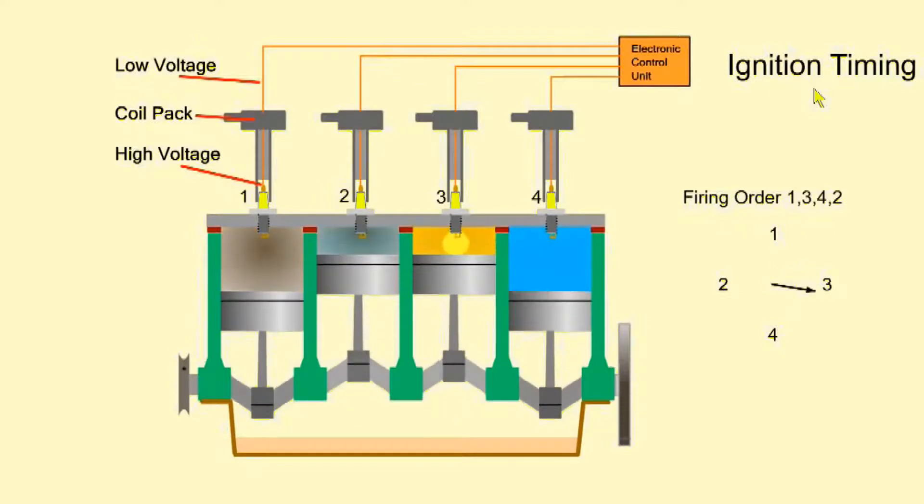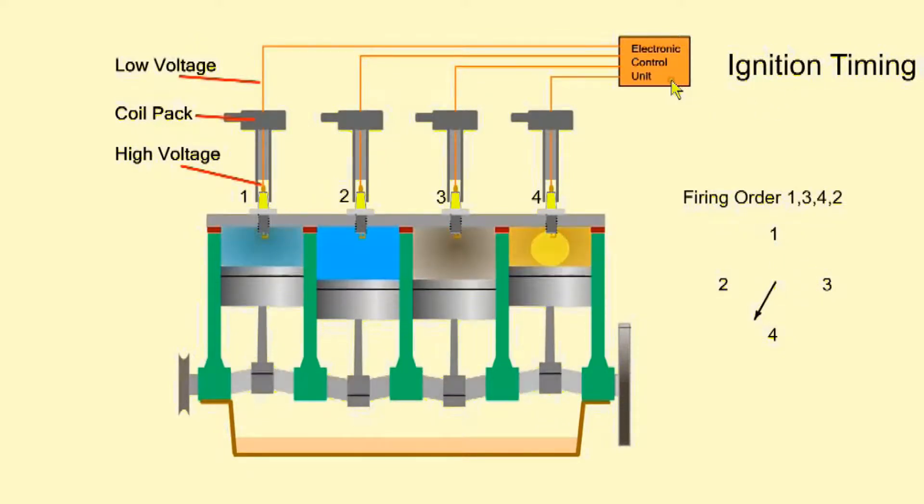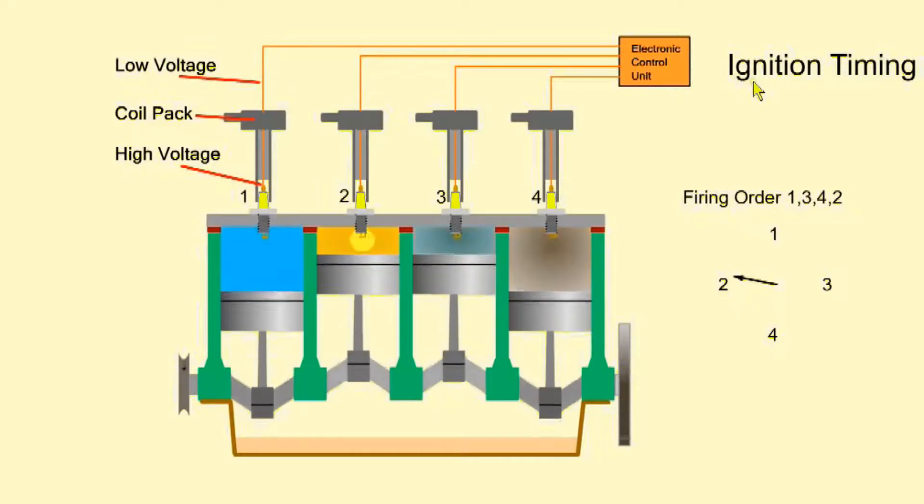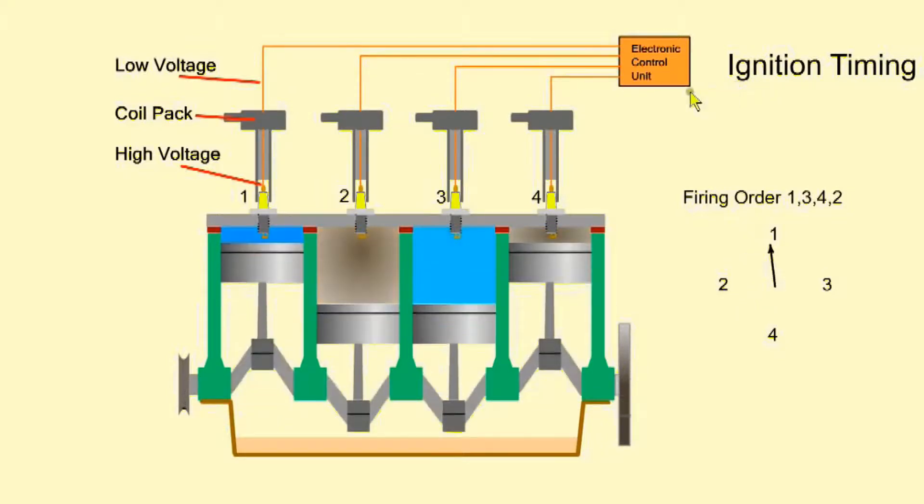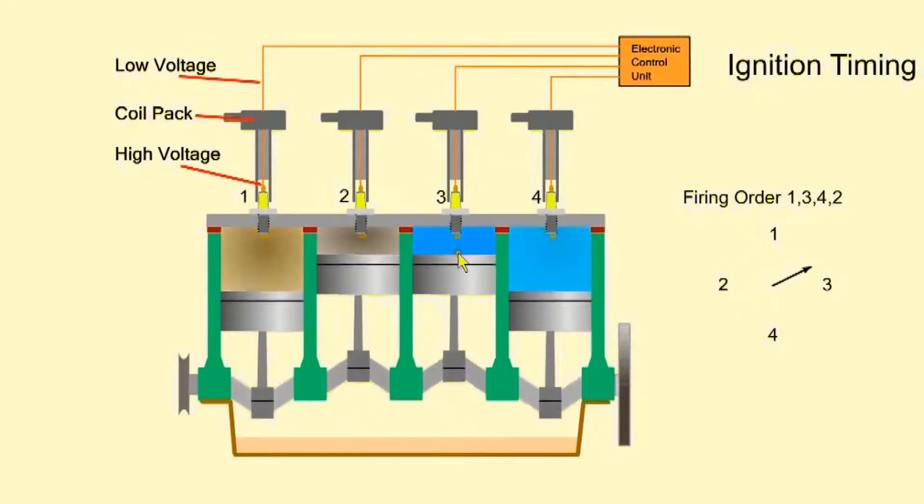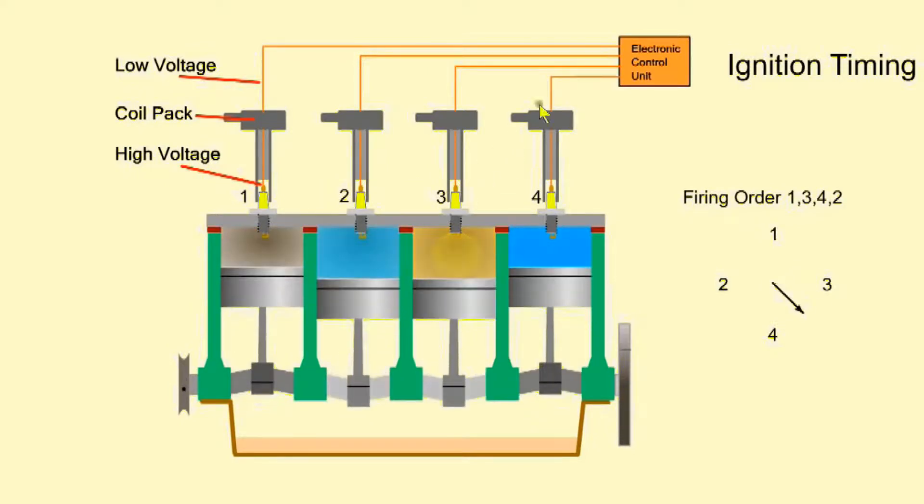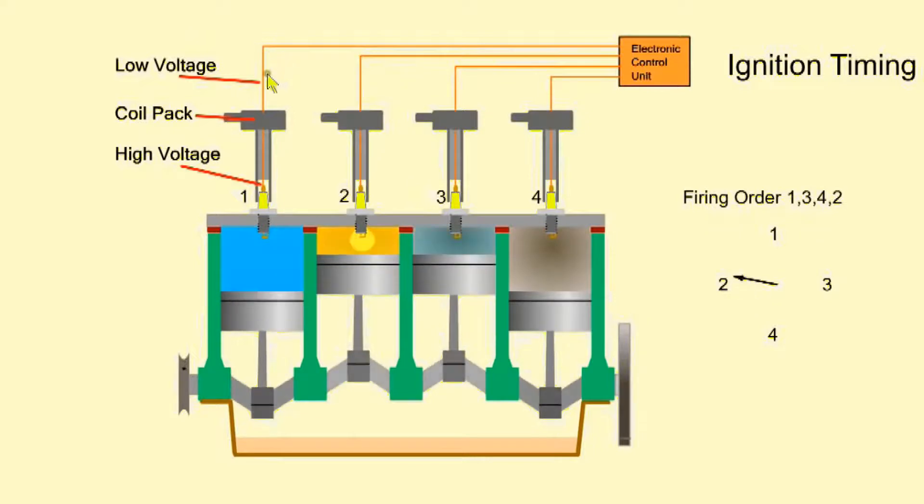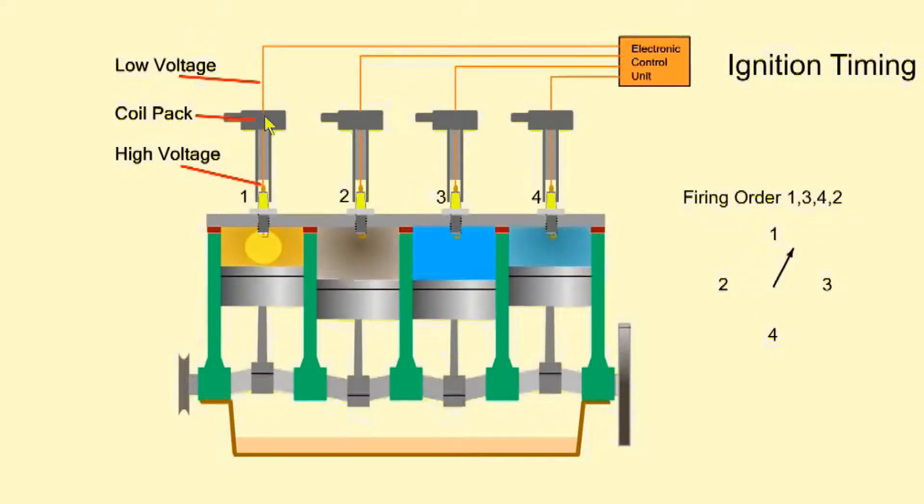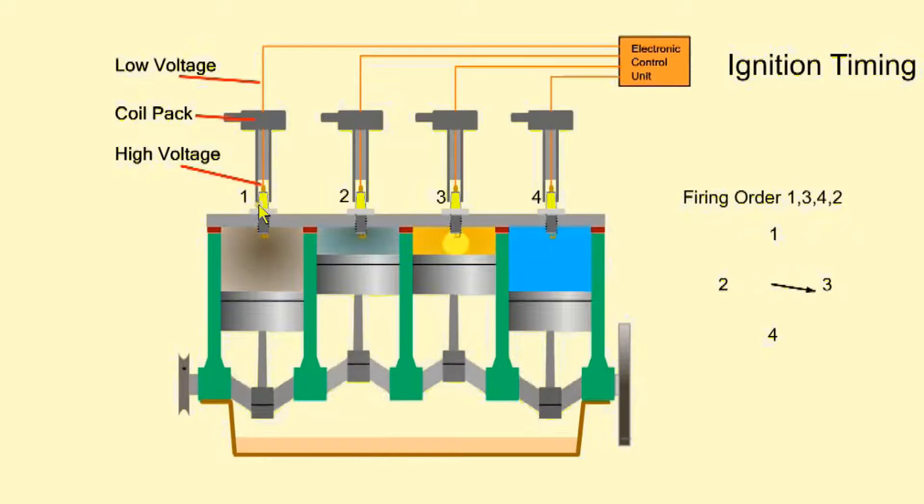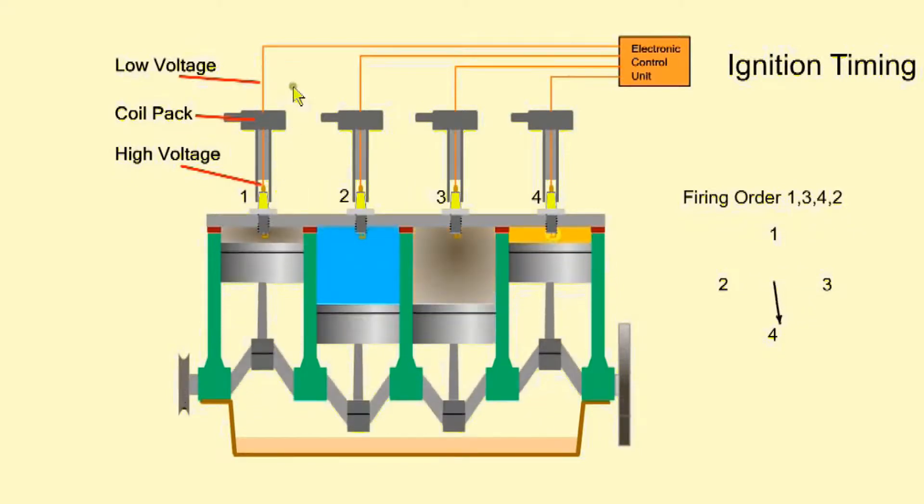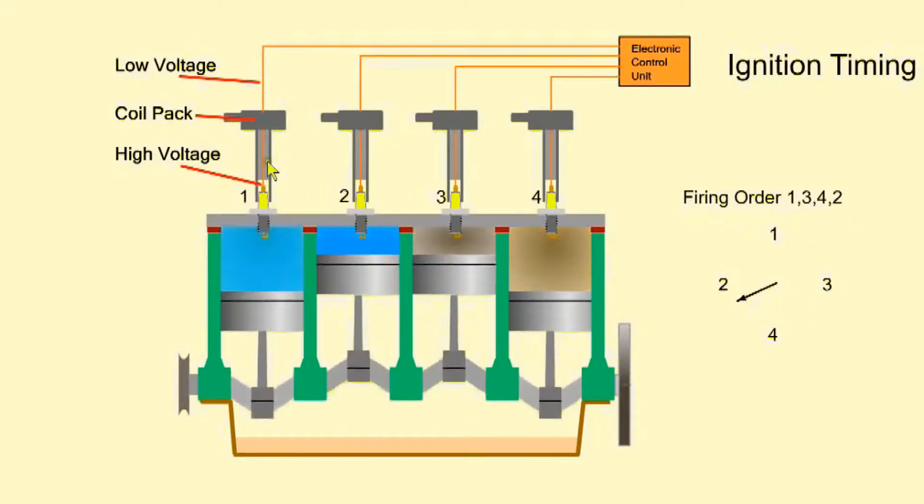We will now look at the outputs from the ECU. Ignition timing regulates the timing of the spark relative to the top dead center. A signal is fed from the ECU via a relay to the relevant HV coil pack which is located on top of the spark plug. The coil pack transforms the signal to high voltage for the spark plug.